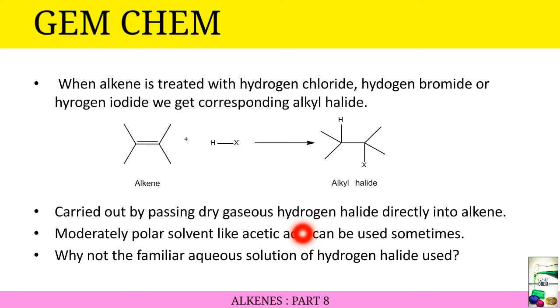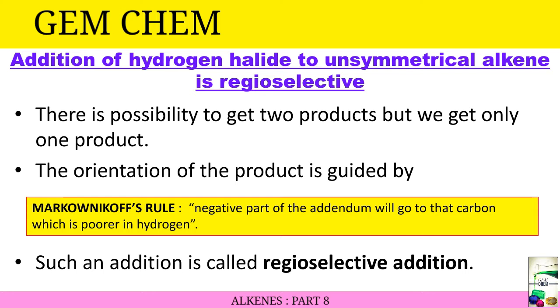Addition of hydrogen halide to unsymmetrical alkene is regioselective. There is a possibility to get two products, but we get only one product. The orientation of the product is guided by Markonikov's rule. The negative part of the addendum will go to that carbon which is poorer in hydrogen. That means X- will go to that carbon with lesser number of hydrogens in it. Such an addition is called regioselective addition.